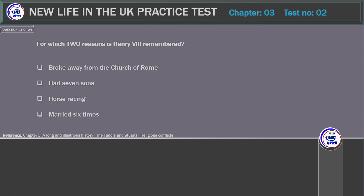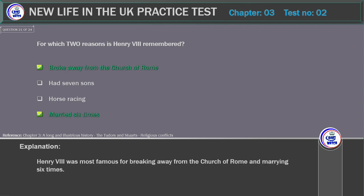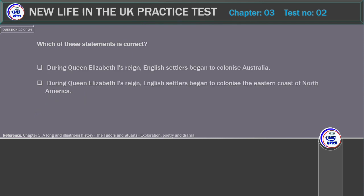For which two reasons is Henry VIII remembered? Options: Broke away from the Church of Rome; had seven sons; horse racing; married six times. Correct answer: Broke away from the Church of Rome, and married six times. Explanation: Henry VIII was most famous for breaking away from the Church of Rome and marrying six times.